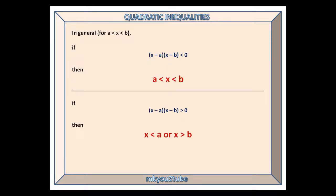In general, for a less than x less than b: if x minus a times x minus b is less than 0, then x is between a and b. And if x minus a times x minus b is greater than 0, then x is less than a or x is greater than b.